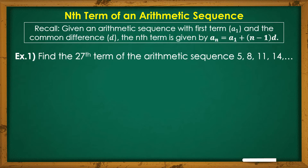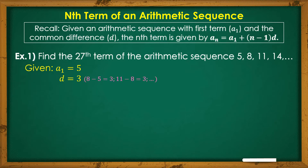Let's consider Example 1. Find the 27th Term of the Arithmetic Sequence 5, 8, 11, 14, and so on. From the given sequence, A sub 1 is 5 and the common difference is 3, since 8 minus 5 is 3, 11 minus 8 is 3, and so on by subtracting succeeding terms. What we are looking for is A sub 27, or the 27th Term.